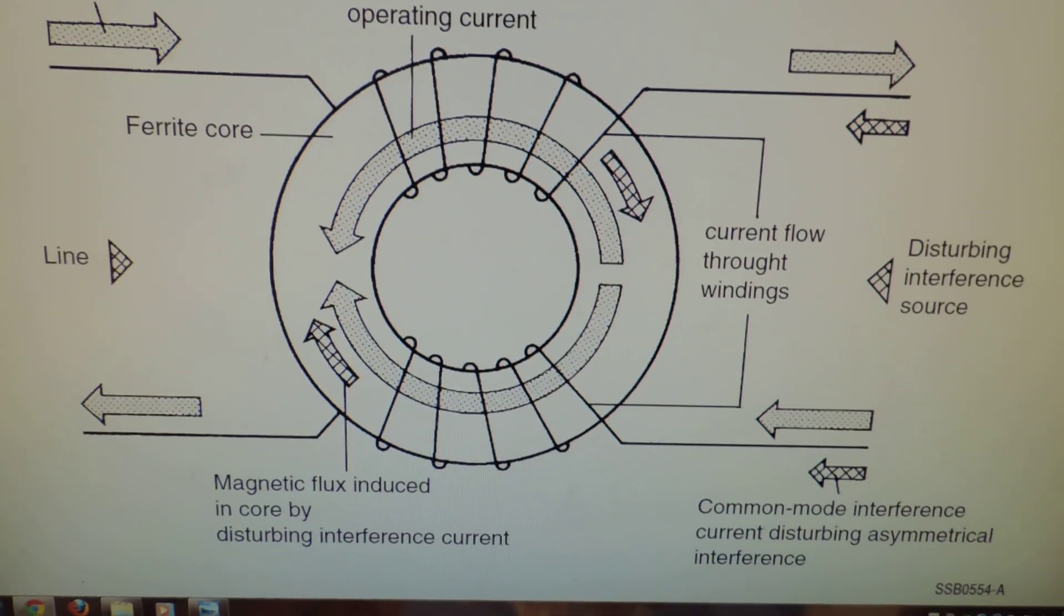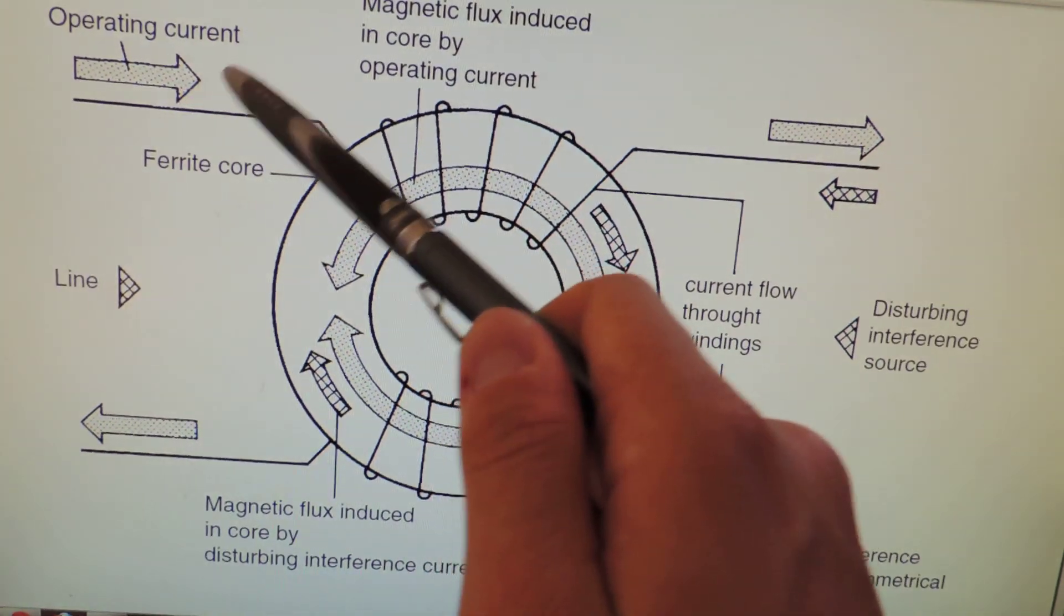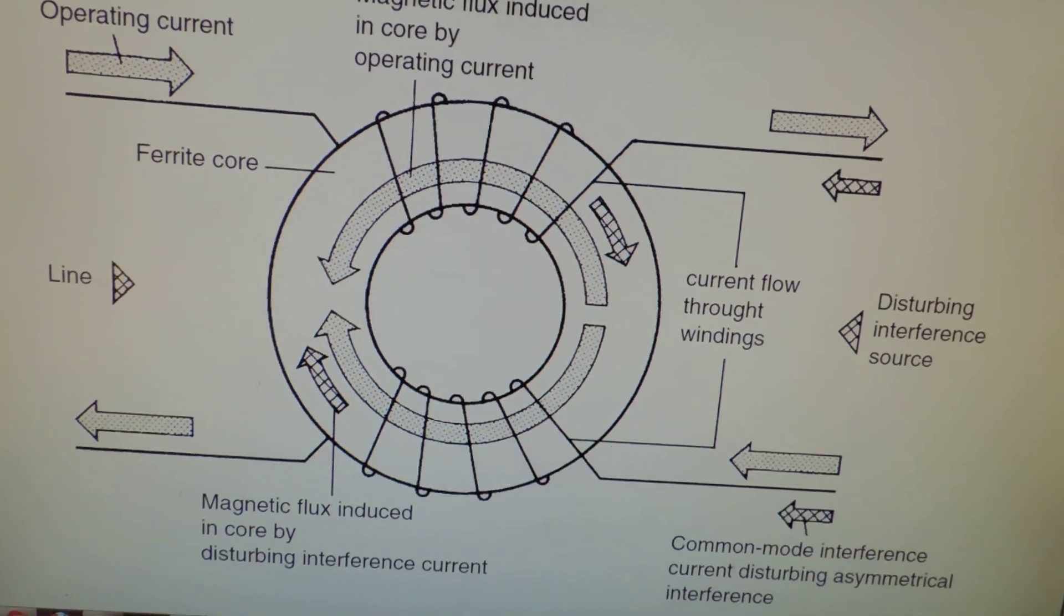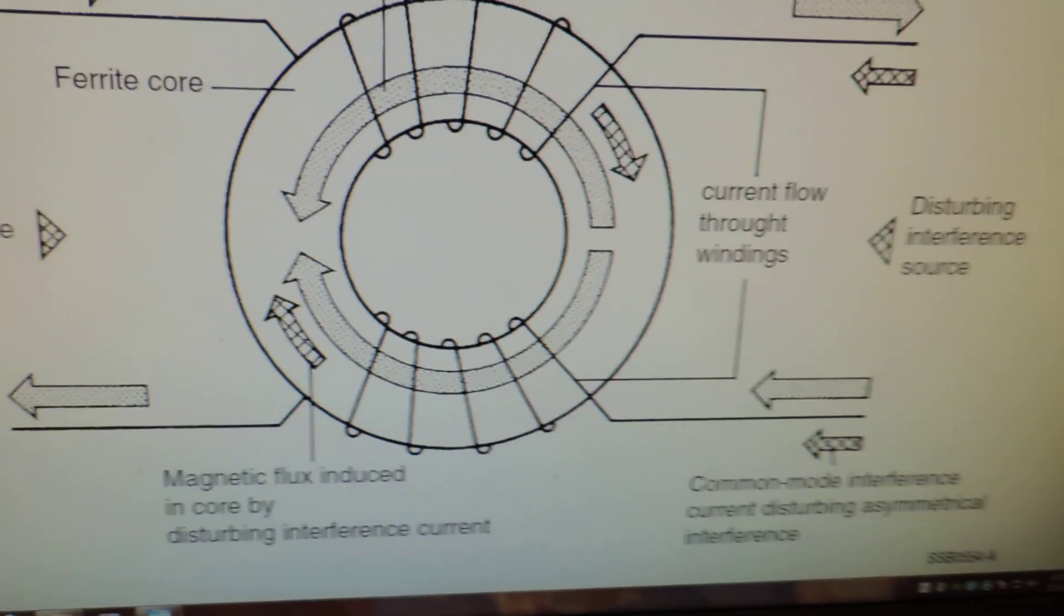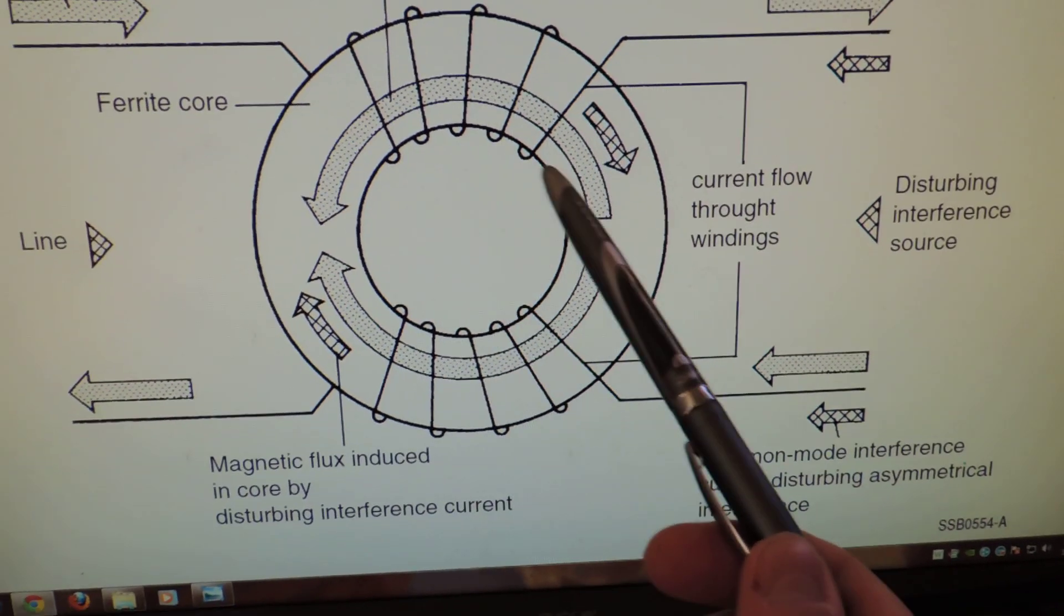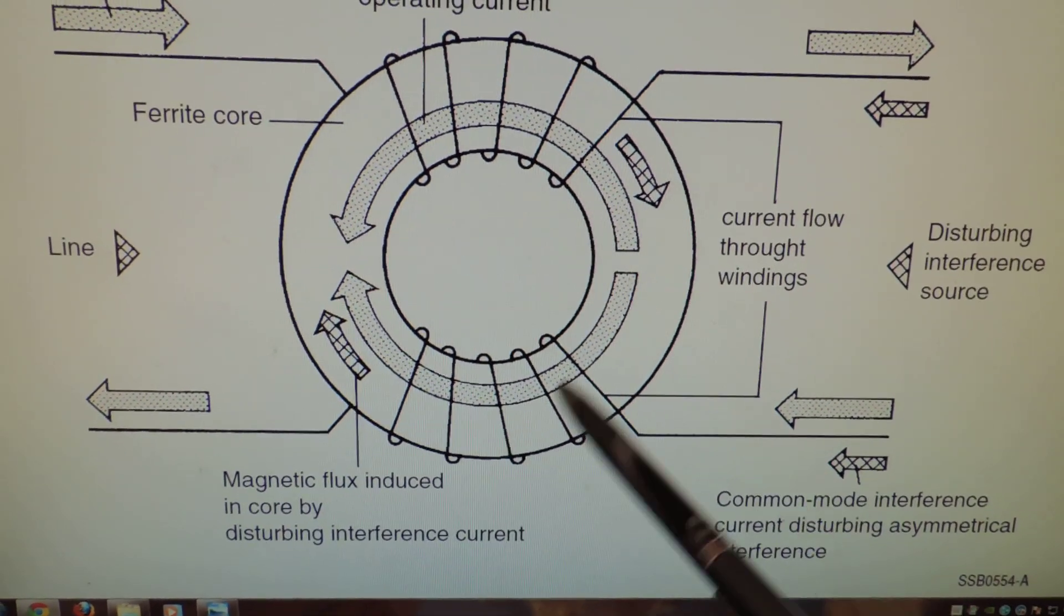This is important because if you have any kind of noise on one of these lines, it's essentially going to create a net flux in one direction. And that will cancel out the noise. It's a very cool concept. That's a particular transformer where you, and it's also a very good example to show you why the fluxes in a core cancel in a transformer.